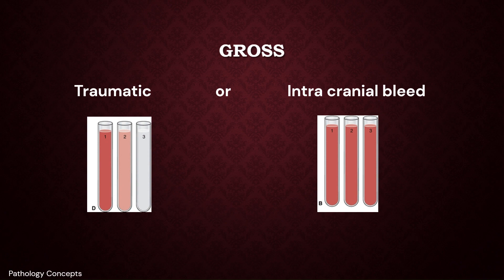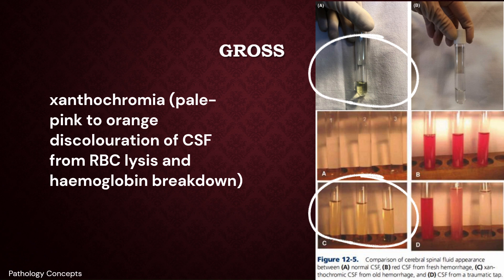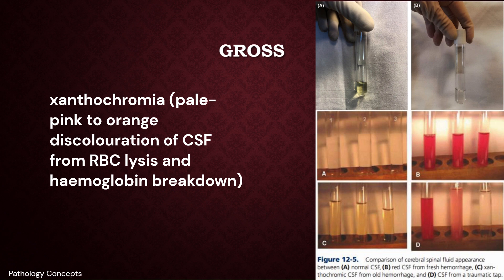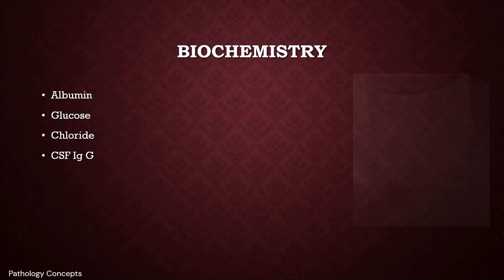A traumatic lumbar puncture may be indicated by CSF clearing — a decrease in RBC count between the first and fourth tube — and a clear supernatant on centrifugation. Xanthochromia is pale pink to orange discoloration of CSF from RBC lysis and hemoglobin breakdown, indicative of intracranial bleed. It is detected by centrifuging the CSF sample and comparing the color of the supernatant with distilled water. Cobweb formation is due to very high protein in CSF and is associated with tuberculosis infection.